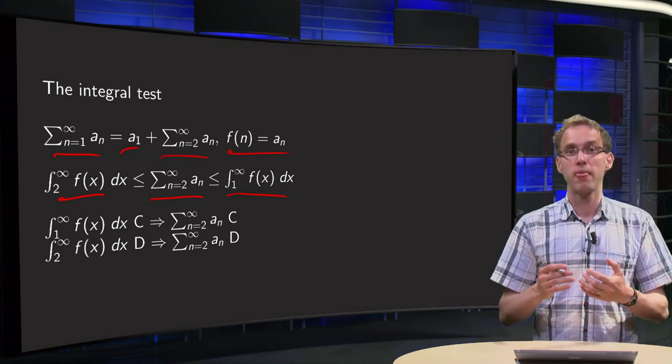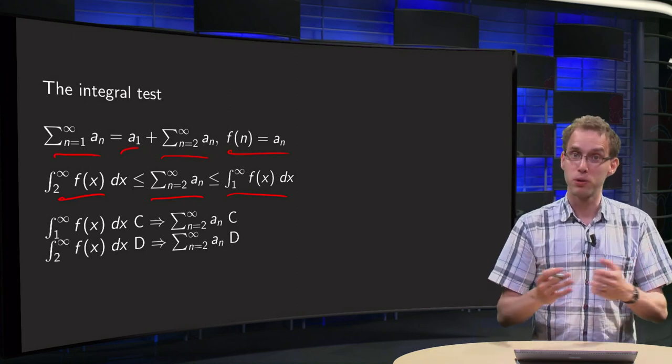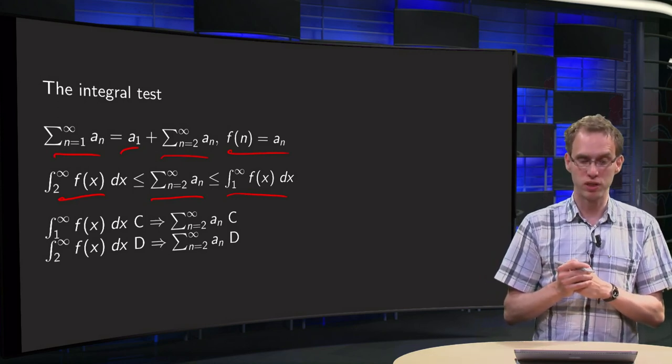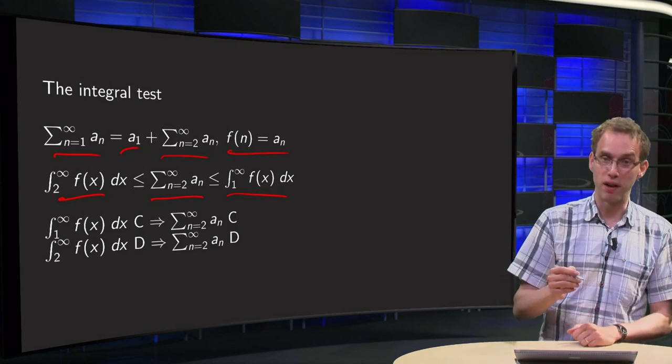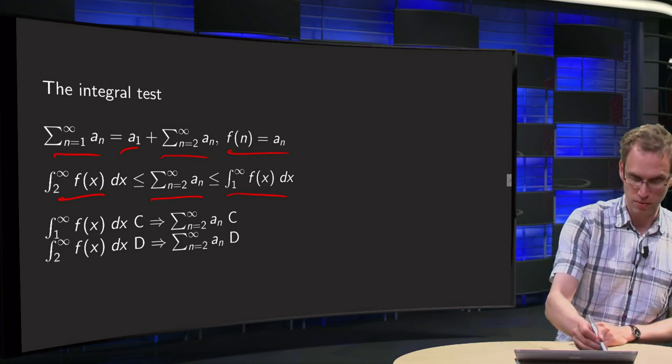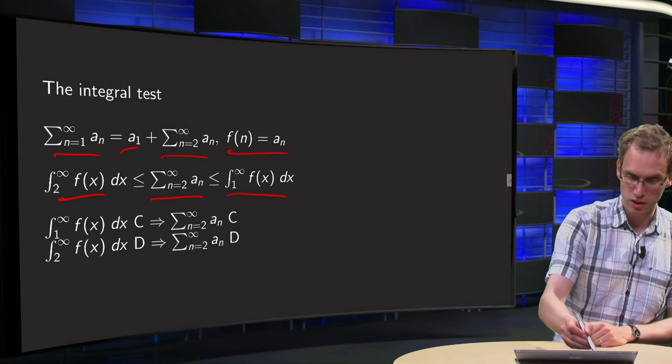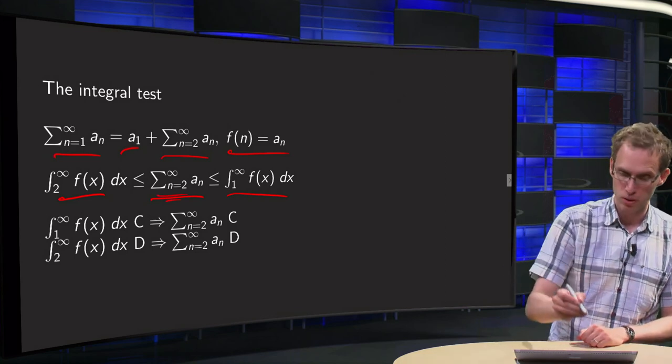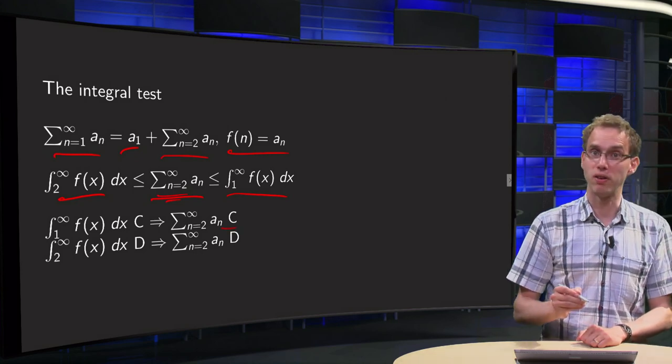First of all, our improper integral from 1 to infinity can be convergent. If my integral from 1 to infinity converges, then this sum over here is smaller than my integral, so I know that the series converges as well.